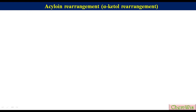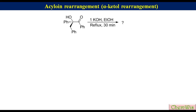Now we will discuss some examples with detailed mechanism. The first example is the rearrangement of 2-hydroxy-1,2,3-triphenylpropan-1-one under basic conditions. Let's go through the mechanism to understand the structure of the product.